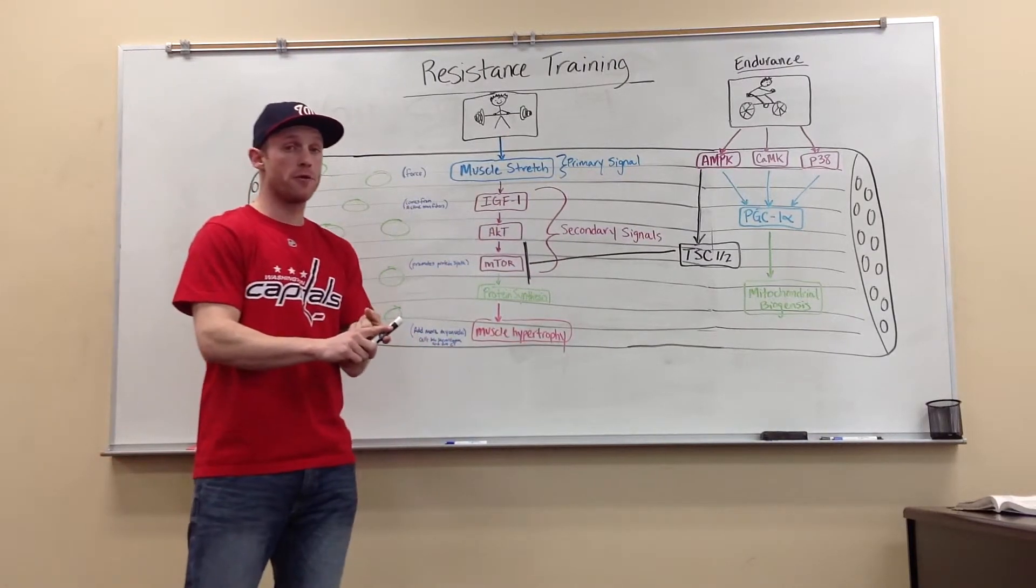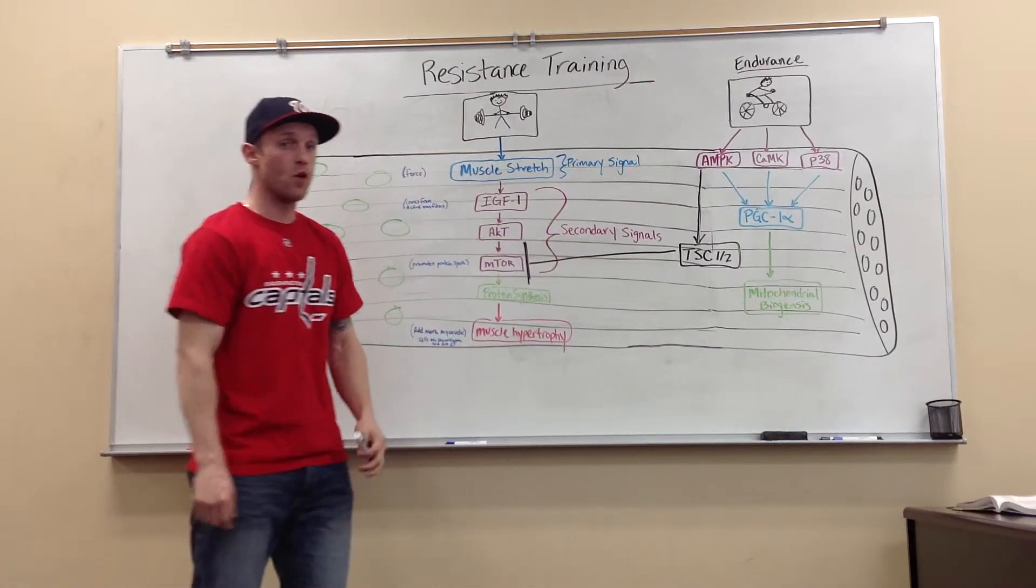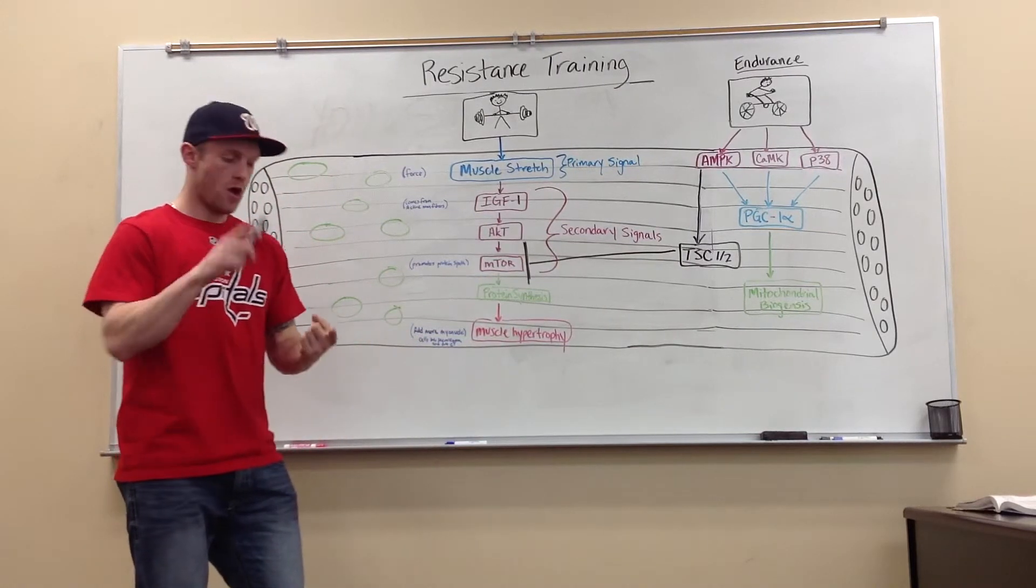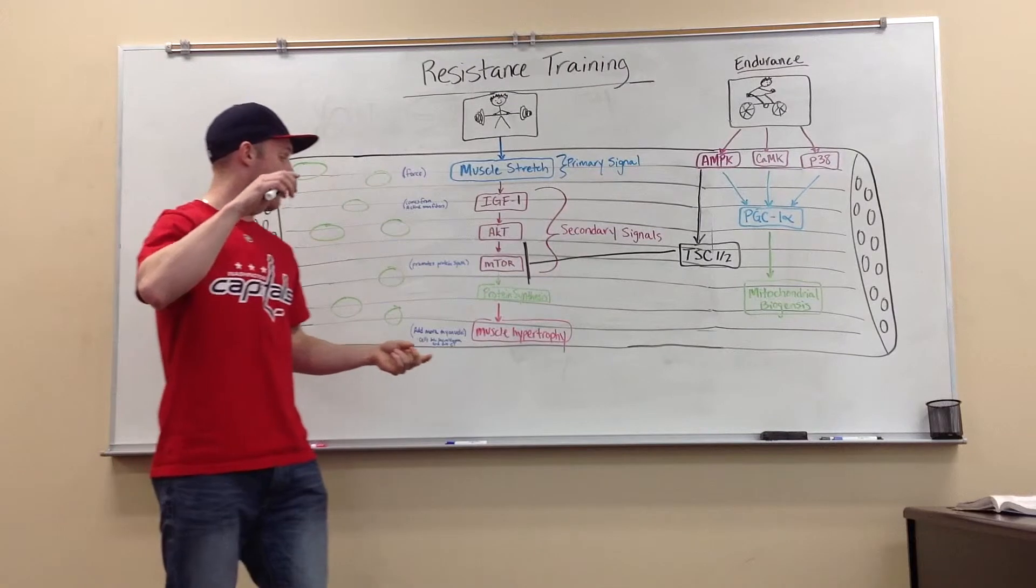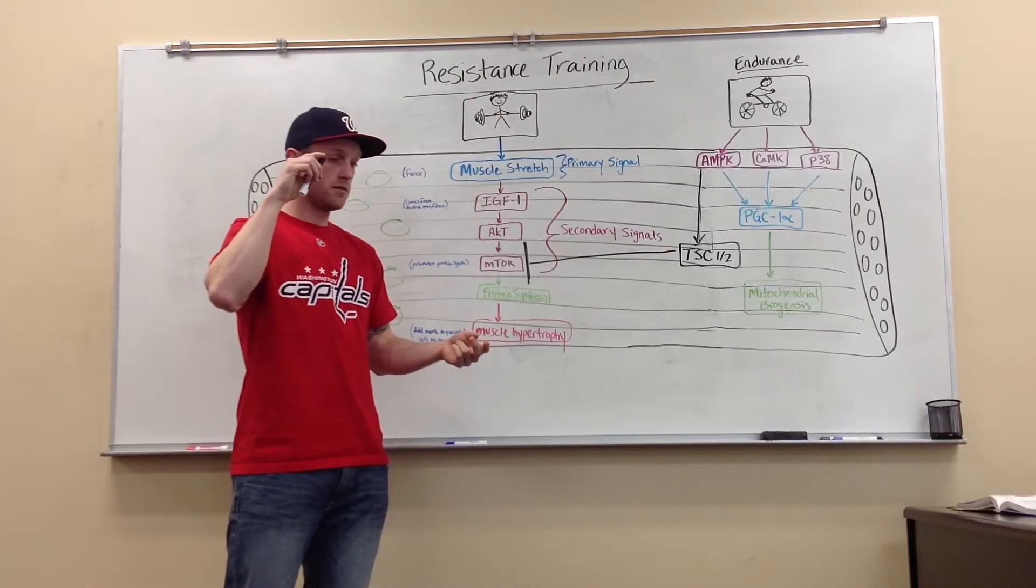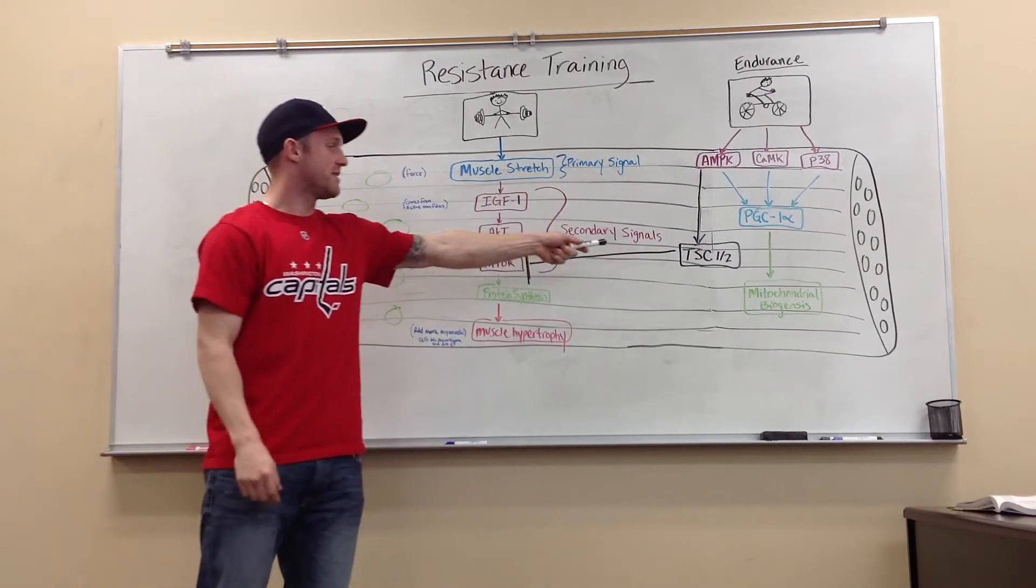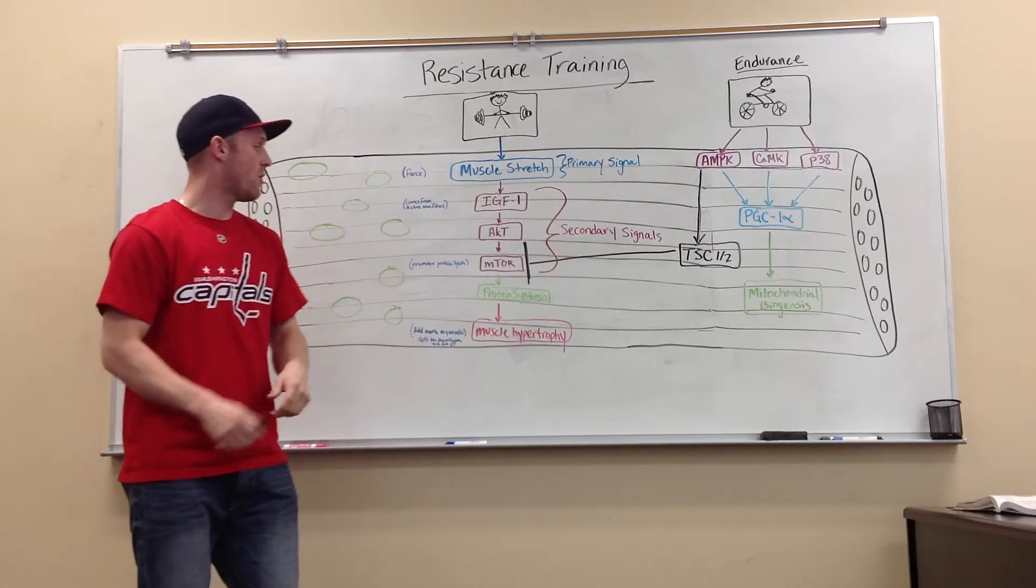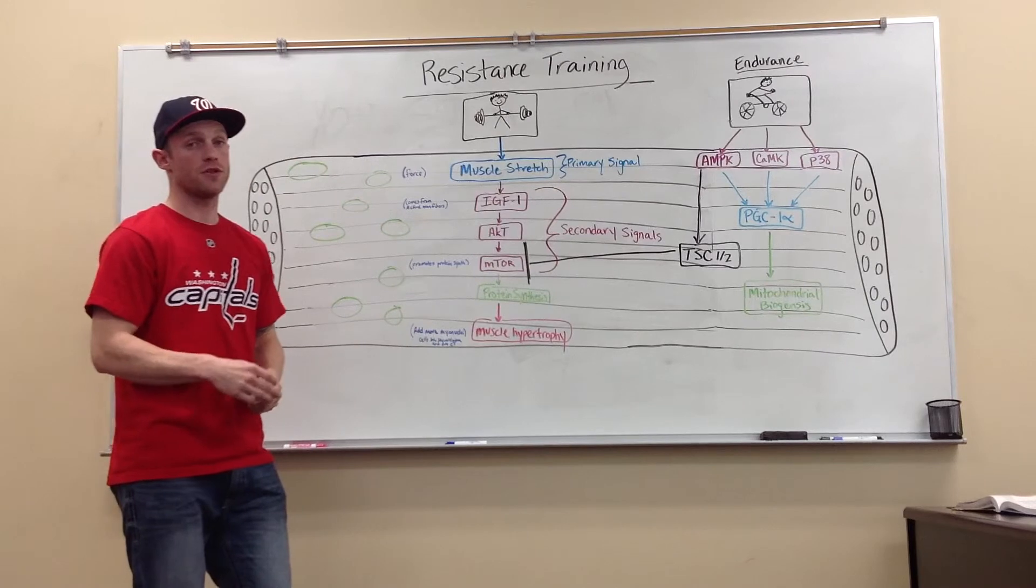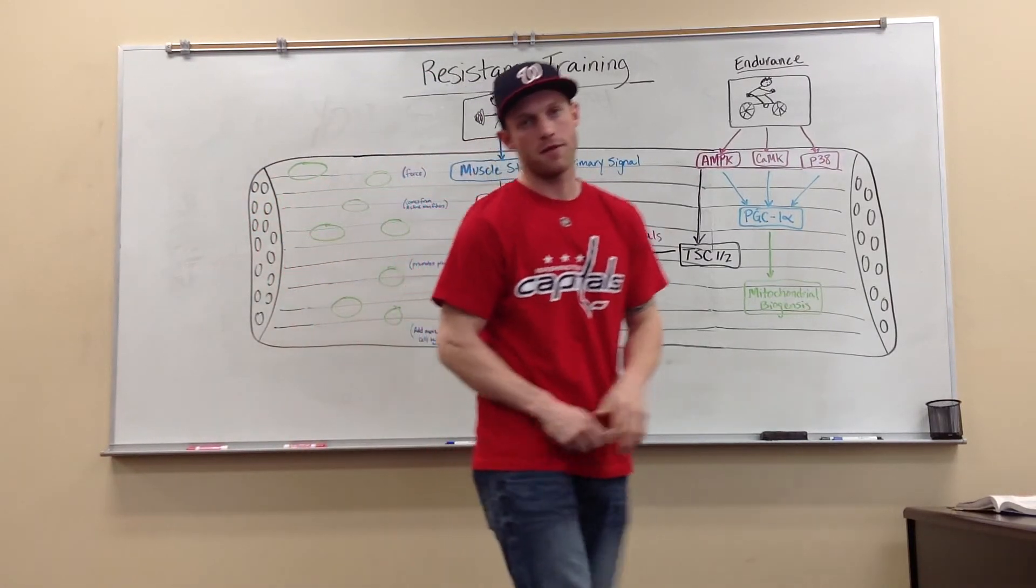So problems for doing both: endurance training activates TSC12 which inhibits MTOR, that's a big one; our muscle fiber change; and then we have our glycogen stores, loss of glycogen stores. So TSC12 inhibits MTOR, we have our fiber shifts from one direction to the other, and then our glycogen stores are depleted, and then there's some hormonal factors but I'm not going to talk about that.